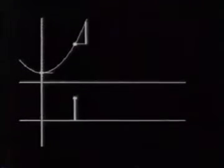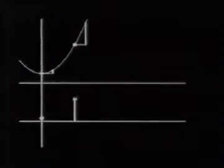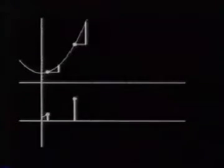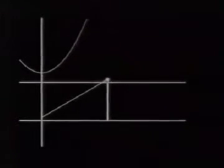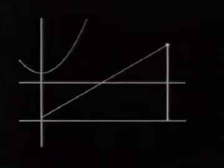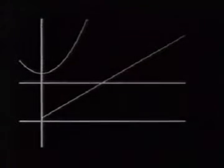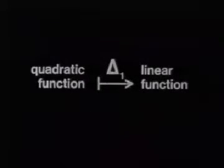So this value here is smaller than the value at the steeper part of the curve. In fact, the value increases like this. So differencing a quadratic gives us a linear function.